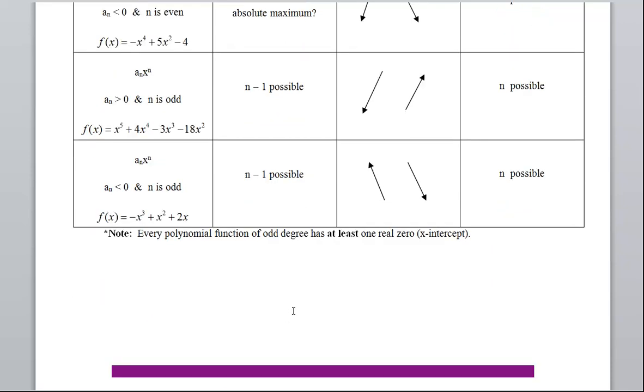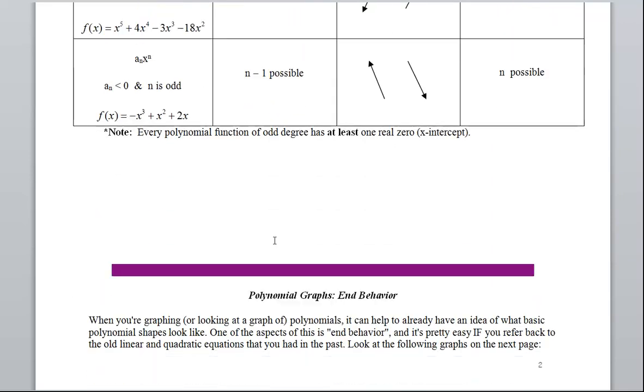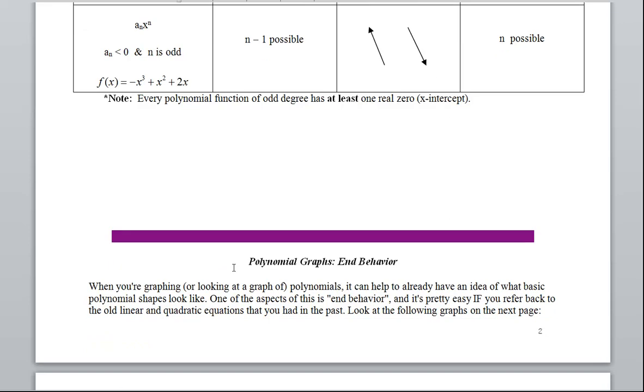Now, I'm going to talk a little bit more about the end behavior. When you're graphing or looking at the graph of polynomials, it can help to already have an idea of what basic polynomial shapes look like. One of the aspects of this is end behavior. And it's pretty easy if you refer back to the old linear and quadratic equations that you had in the past. Now, look at the following graphs on the next page.